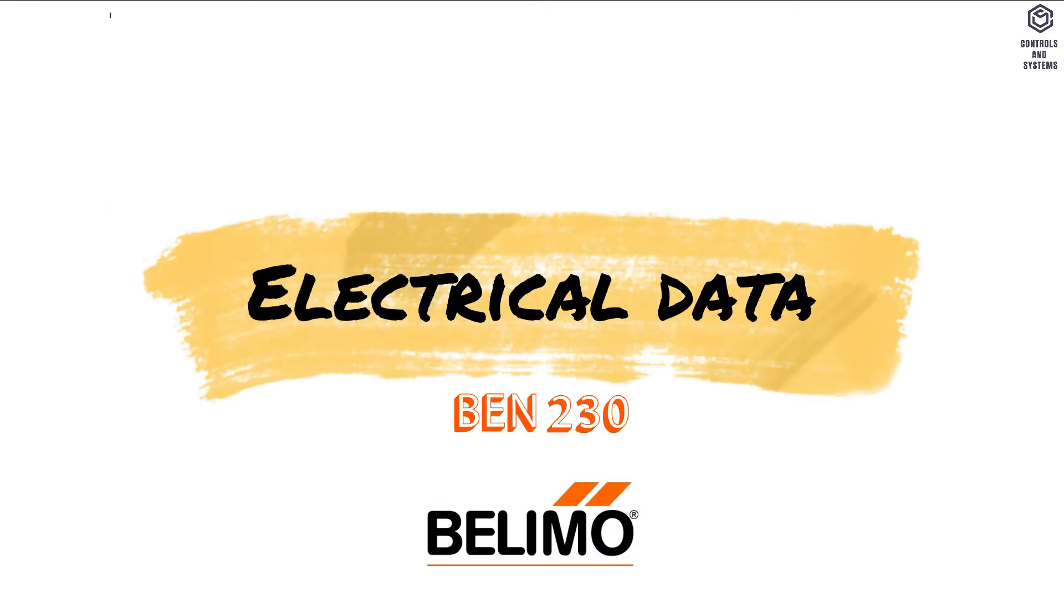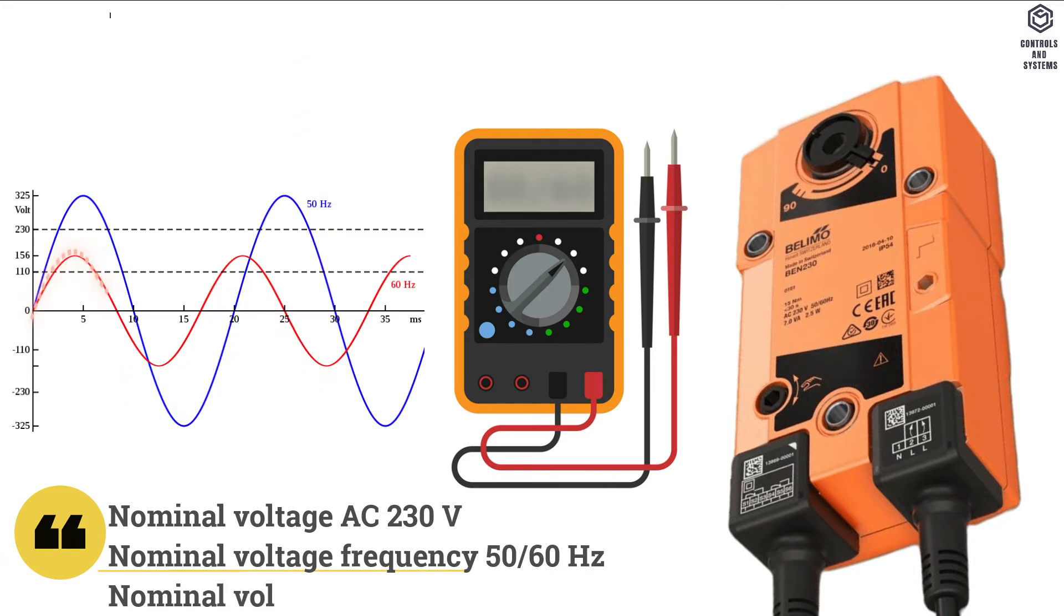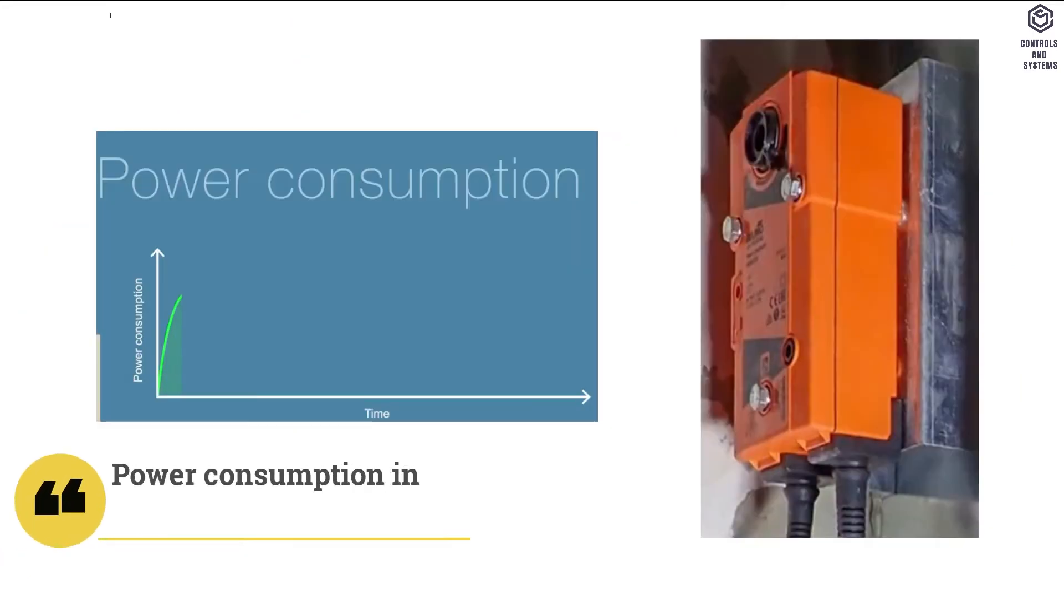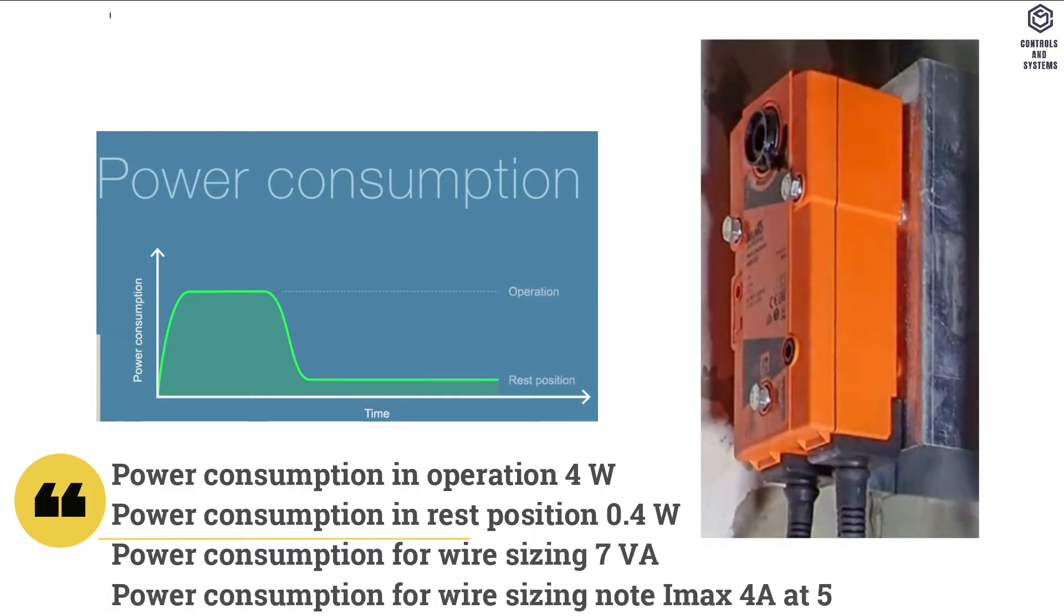Electrical data: nominal voltage is AC 230 volt. Frequency is 50 or 60 hertz. Power consumption in operation is 4 watt, in rest position is 0.4 watt, for wire sizing is 7 VA. For wire sizing note current maximum is 4 amps at 5 milliseconds.